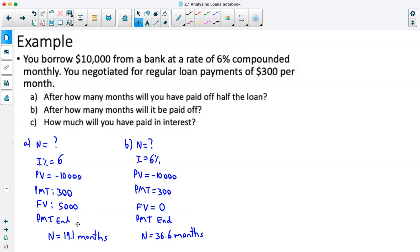That's because in the first half, we have more interest being accumulated. And as we pay off more of the loan, we're having less interest being accumulated. So it's going to take less time for the second half to be paid off.